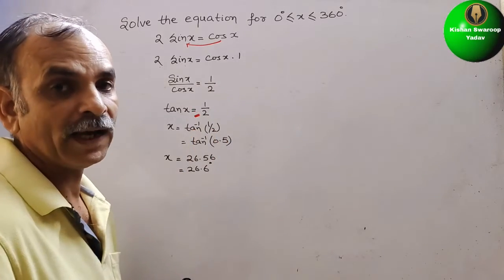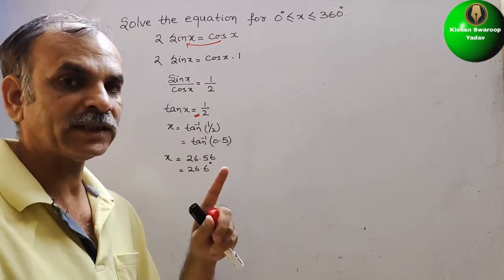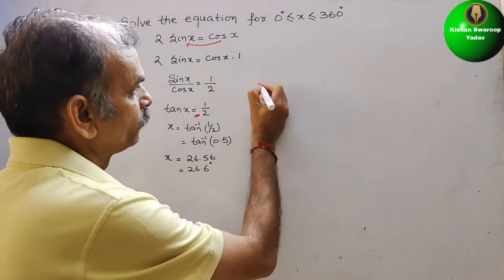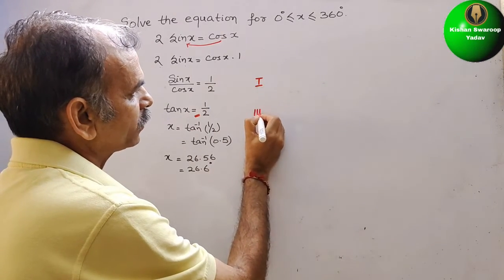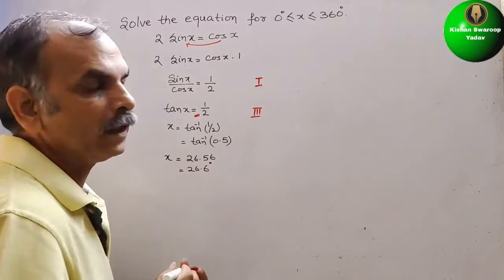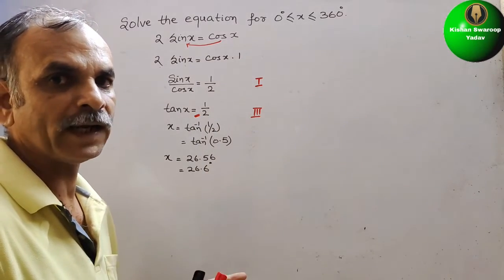Where tan is positive? In the first and the third quadrant. In first quadrant we used to write how?